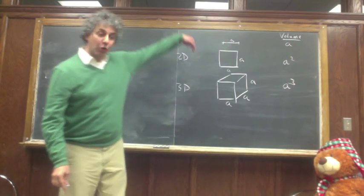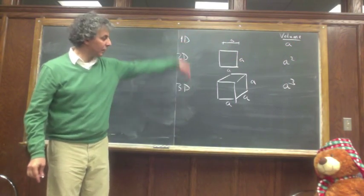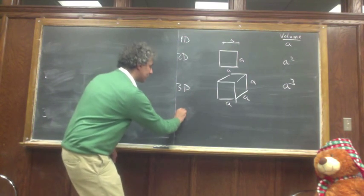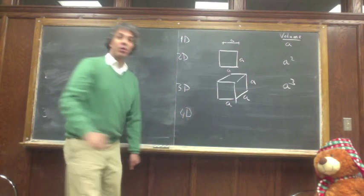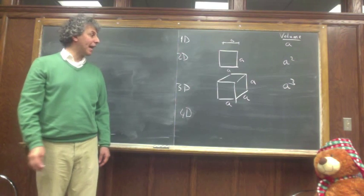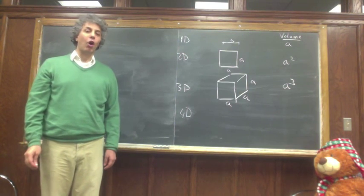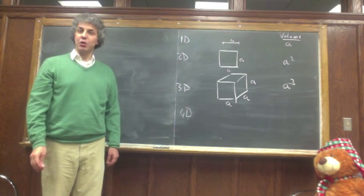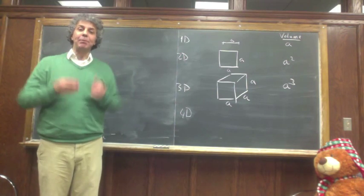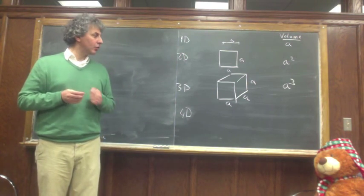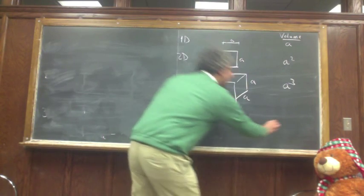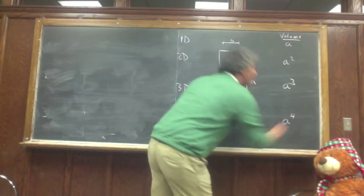Now I can go to four dimensions. In four dimensions, I would have each surface of a cube with a depth of a. The volume, which I'm not drawing here, would be a to the fourth.